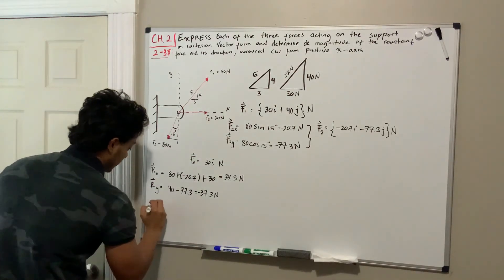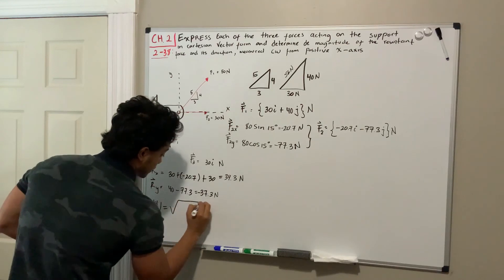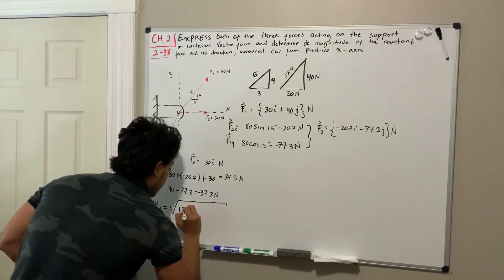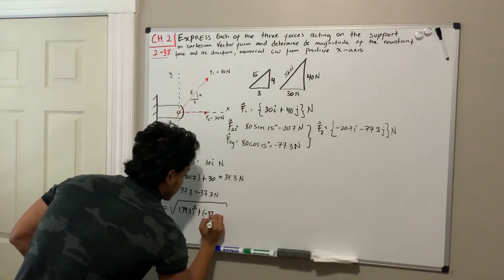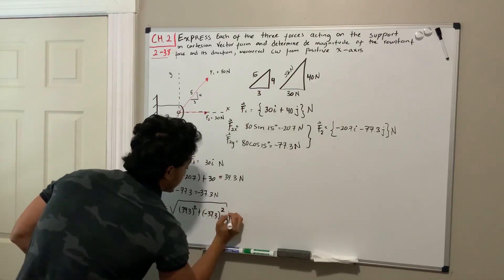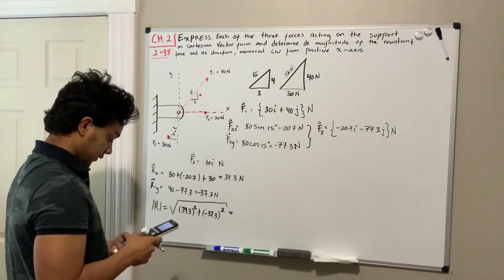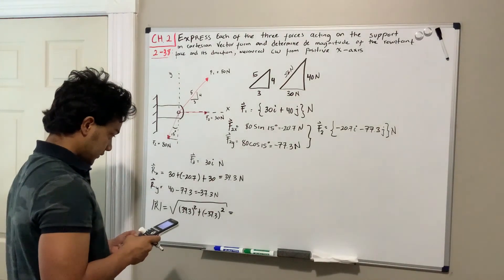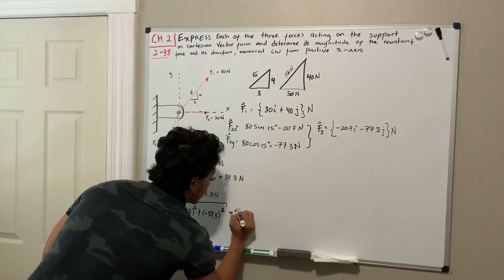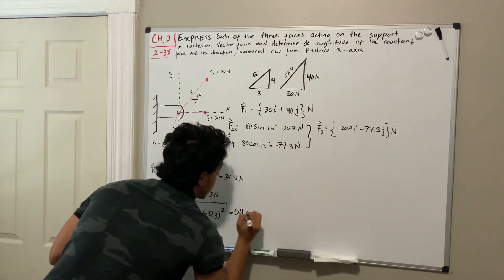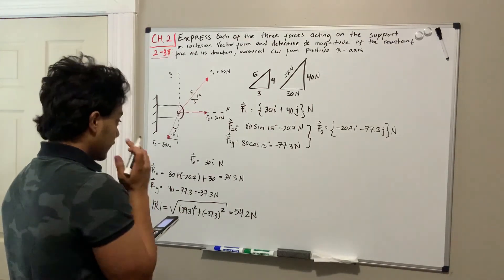After having the components, we use the Pythagorean theorem to find the magnitude. The magnitude of R is the square root of 39.3 squared plus 37.3 squared. Using a calculator, this gives us 54.2 Newtons.